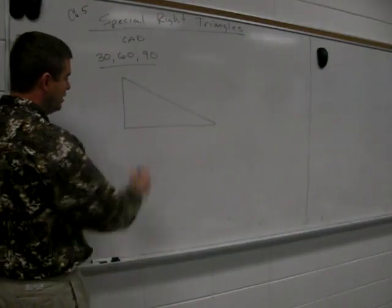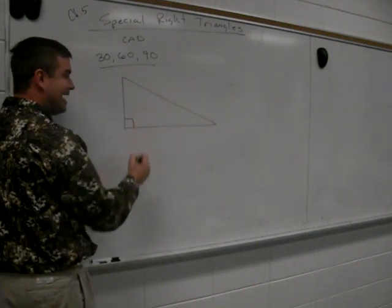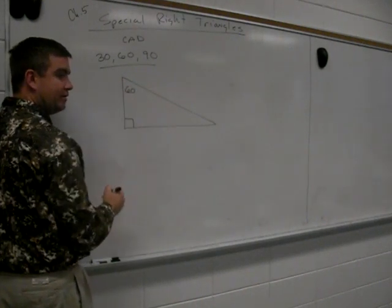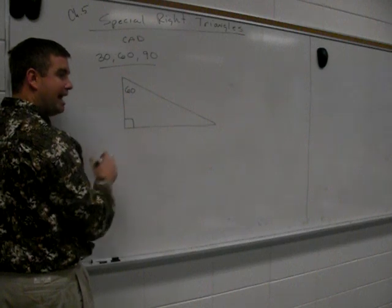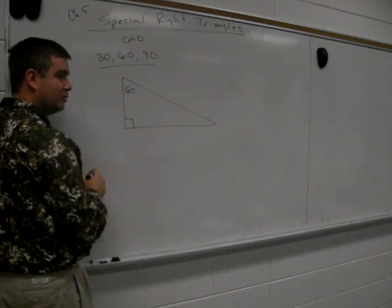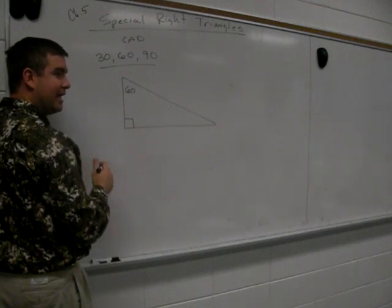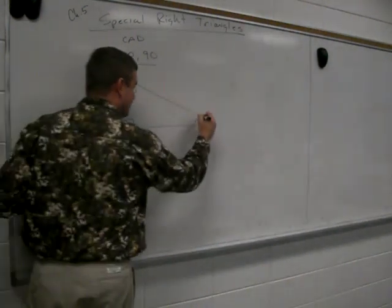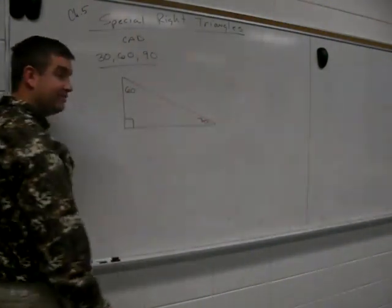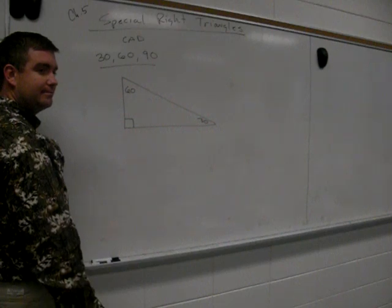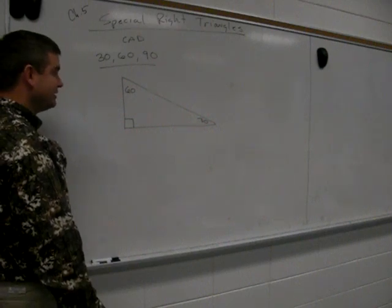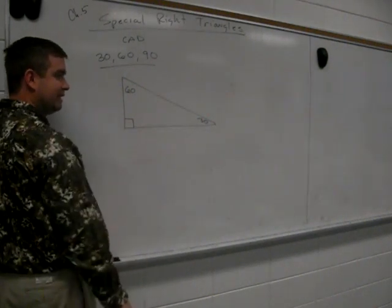But in a true 30-60-90, you have a 60-degree angle which is fairly wide. I'm trying not to use the word fat. A 60-degree angle that's wide. Then down here, you have a 30-degree angle that's fairly skinny. So you got a 30-60-90. This obviously is the 90-degree angle.